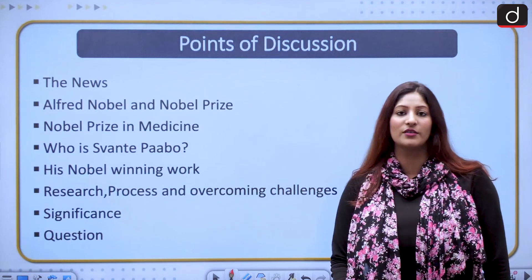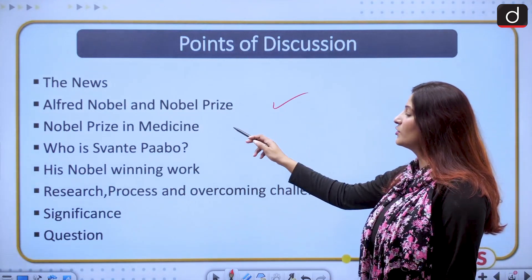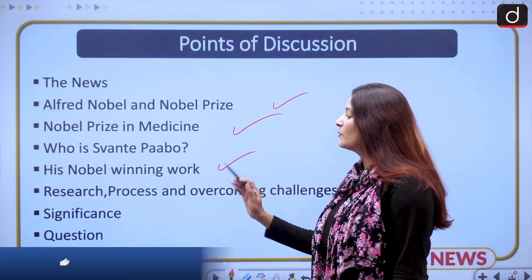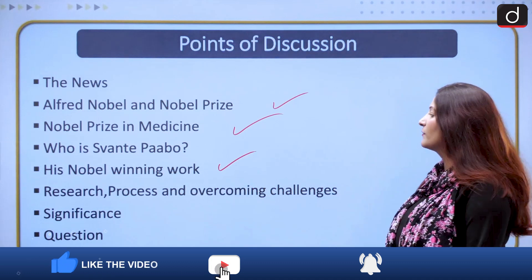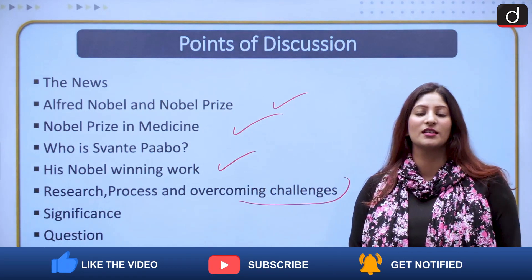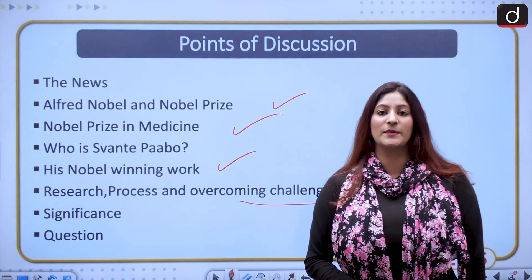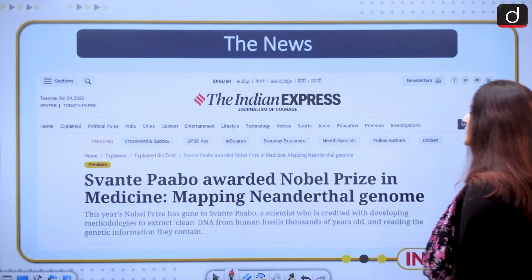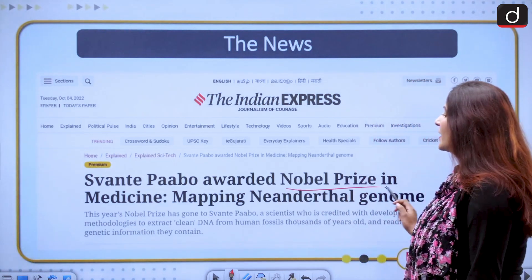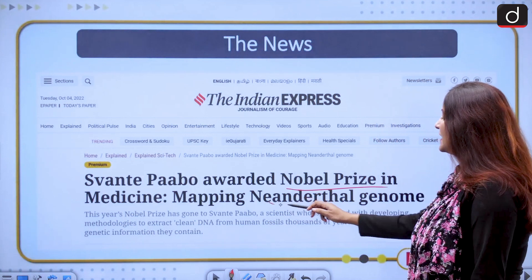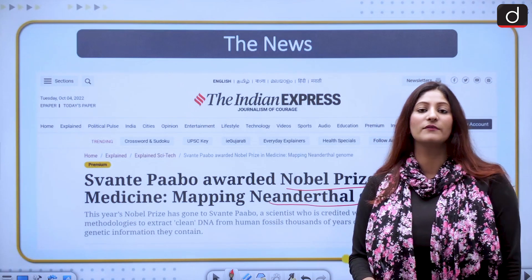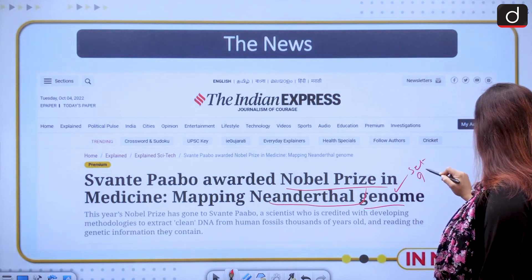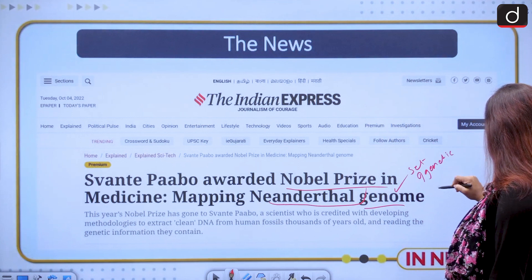From the news to Alfred Nobel and Nobel Prize, what is the Nobel Prize in medicine, who is Dr. Svante Pääbo, his Nobel winning work, the research process and overcoming challenges, the significance of this research, and in the last of the segment a question. Let us move ahead and talk about this news piece. Svante Pääbo awarded Nobel Prize in medicine for mapping Neanderthal genome. Genome is a set of genetic material.